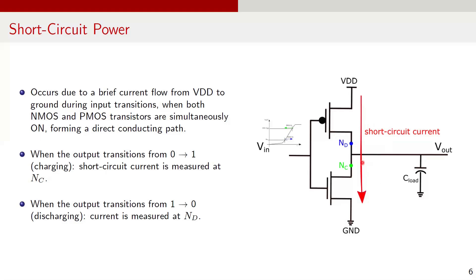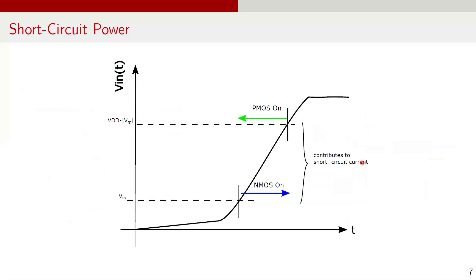Simulation engines use sophisticated techniques to compute accurate short circuit power. The graph illustrates how the inverted input signal VIN varies over time and its relevance to short circuit power dissipation. As VIN transitions, there is a specific range where both NMOS and PMOS transistors are conducting, establishing a direct path from VDD to ground. This results in short circuit current contributing to power loss. The short circuit current depends on the rise and fall time of the input signals. Longer rise and fall times increase the duration for which both transistors are on, leading to higher short circuit power. Larger load capacitance can also affect transitions, indirectly influencing short circuit current.